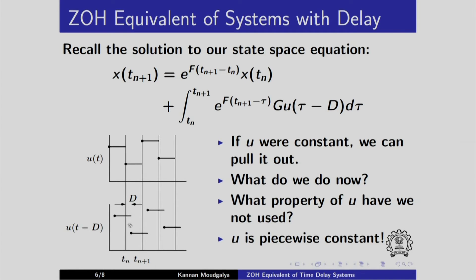Although u is not constant throughout the interval, it takes two values, one value here over this interval and over the second interval, it takes another value. So it should allow us to simplify this expression, which we will see in the next slide.